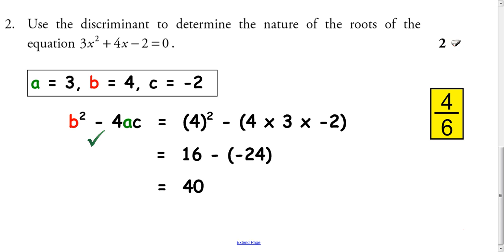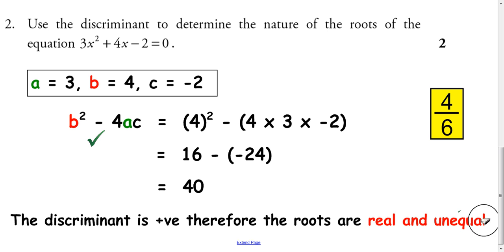To get your last mark here, you have to write a statement. So, since the discriminant is positive, the roots are real and unequal for your mark. If it was equal to 0, the discriminant, your roots would be real and equal. They'd be the same. And if the discriminant was less than 0, then the roots would be non-real. They wouldn't exist.